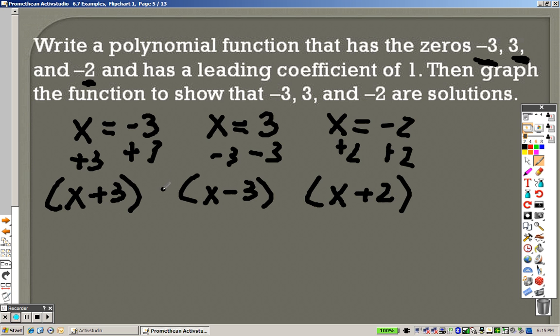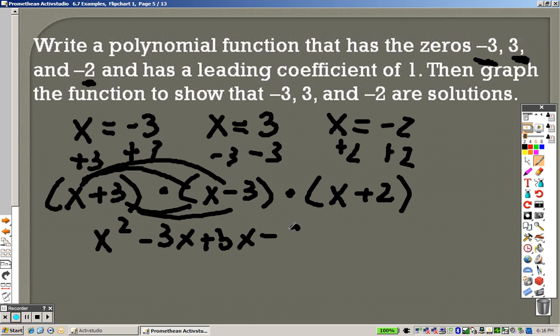Now, guess what? This is all multiplication. So I can distribute and FOIL and find my answer. So x times x is x squared. x times negative 3 is negative 3x. 3 times x is 3x, and since it's positive, it's a plus. And 3 times negative 3 is negative 9. Negative 3 and a positive 3 cancels. So really, I have x squared minus 9, and all of that times that x plus 2.